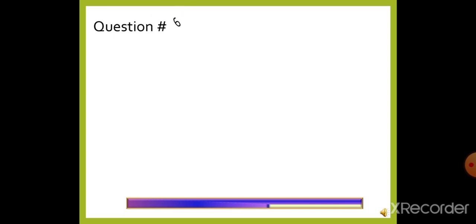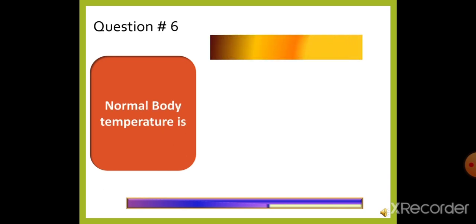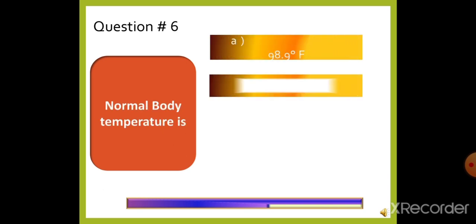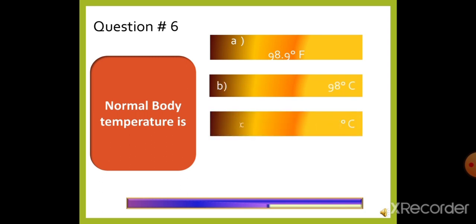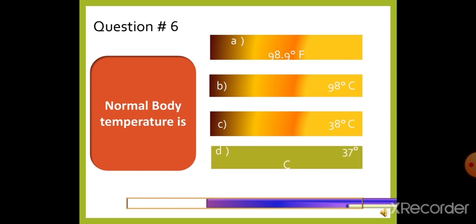Question 6: Normal body temperature is — option A: 98.9 degrees Fahrenheit, option B: 98 degrees Celsius, option C: 38 degrees Celsius, or option D: 37 degrees Celsius. The right answer is option D, 37 degrees Celsius. Normal body temperature is 37 degrees Celsius.